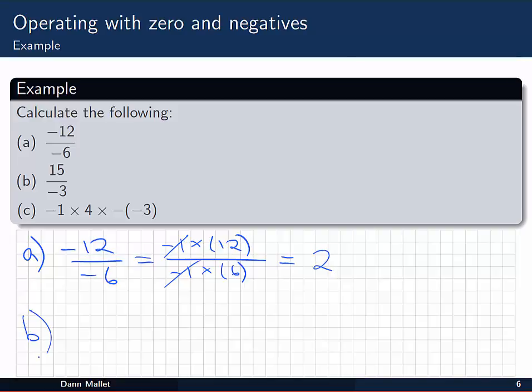Okay, same sort of reasoning here. 15 on minus 3. Okay, 15 on minus 3. I can think of that as 15 over minus 1 times 3. 15 and the 3, we'll get a bit of cancelling there. And we're left with 5 on minus 1, or just minus 5.